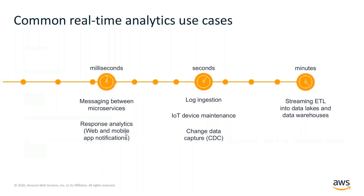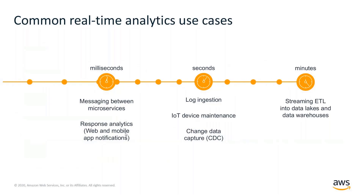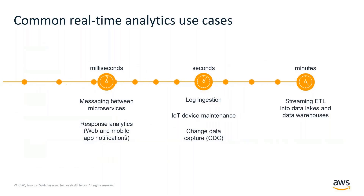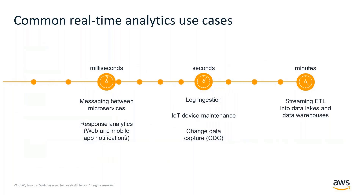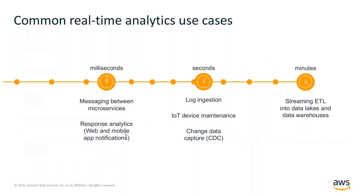An example of applications that need millisecond-level latency is using a messaging layer for microservices communication. Instead of using synchronous communication between microservices, you could use a streaming or stream storage layer to hold messages and facilitate asynchronous communication. This has the benefit of providing more robust asynchronous communication where the components that make up your microservices mesh are less brittle.